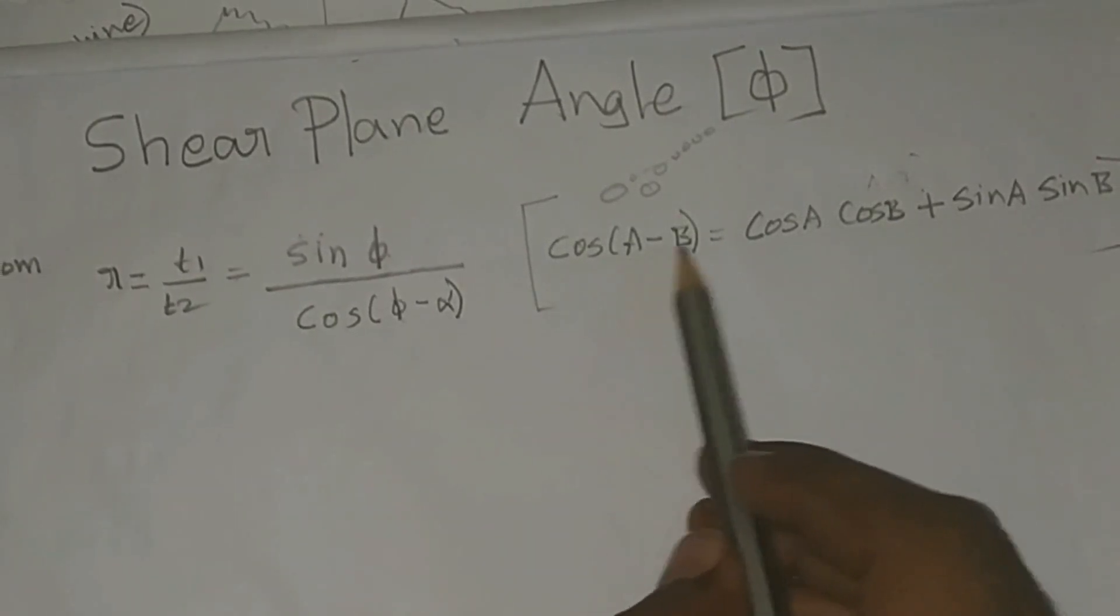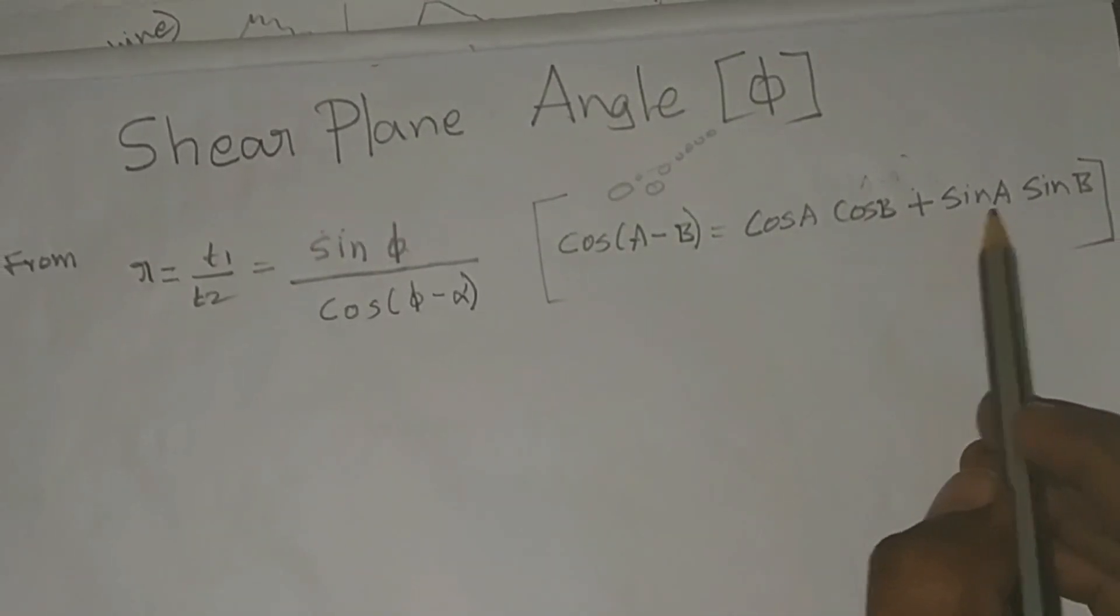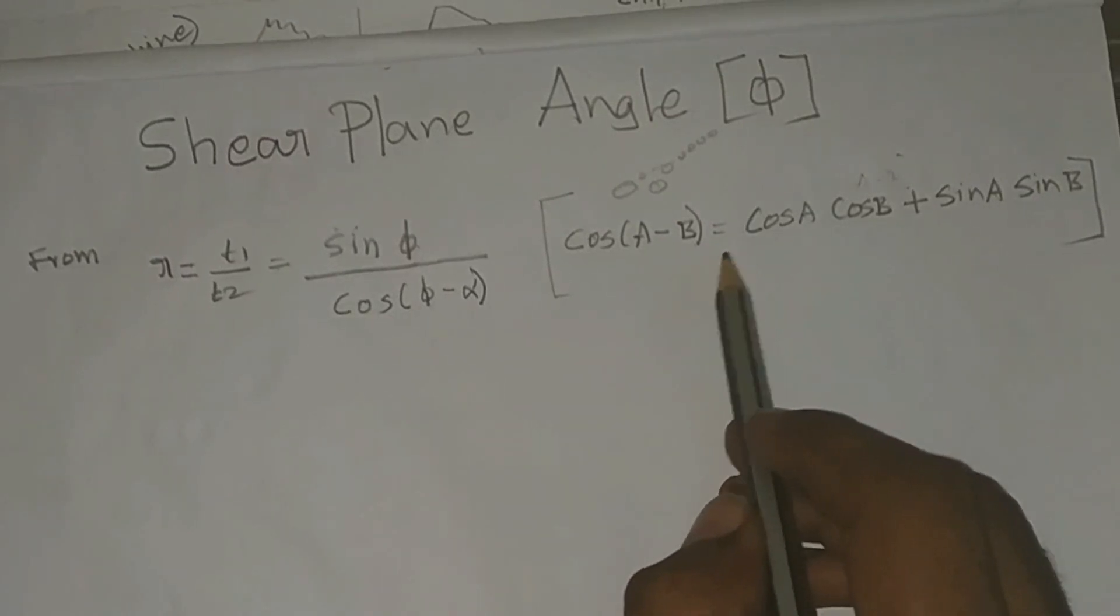See here, cos(a - b) = cos a cos b + sin a sin b. We are going to implement this here.